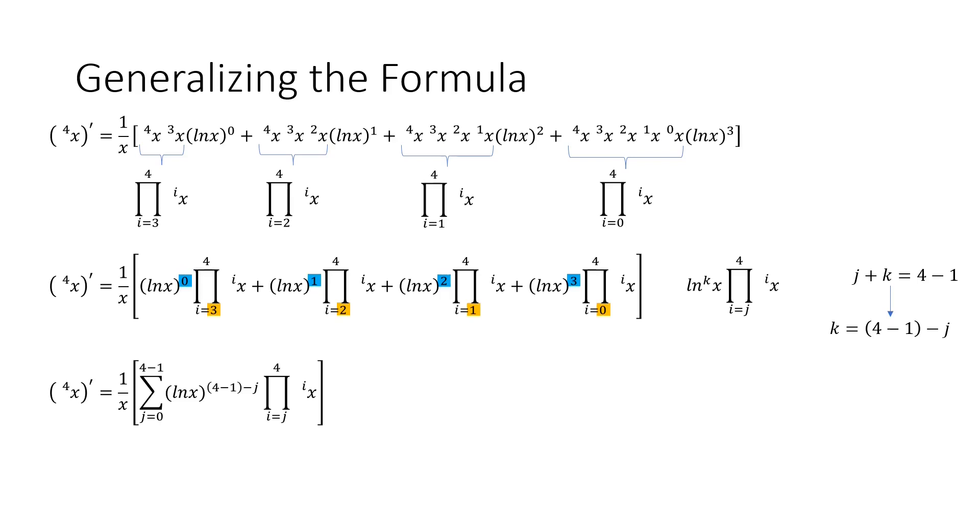So a challenge for you, if you want, you can repeat the steps for the derivative for the fifth tetration of x, as we did before. Do you notice our pattern continuing? Now we have enough to conjecture a formula for the derivative of the nth tetration of x, which I have left in a gray box until we prove it.